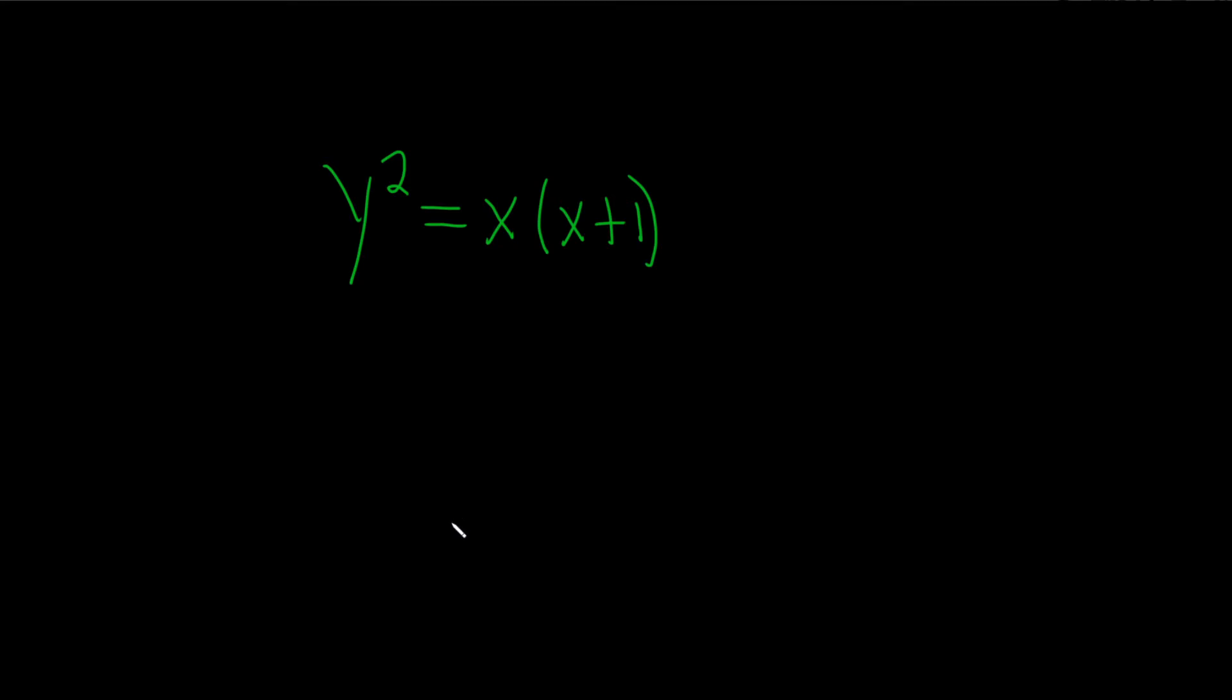In this problem, we're being asked to find dy dx using logarithmic differentiation. So when you use logarithmic differentiation to find the derivative, the very first step is to take the natural log on both sides. So we have the natural log of y squared equal to the natural log of x times x plus 1, just like that.